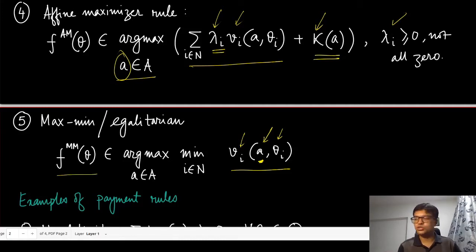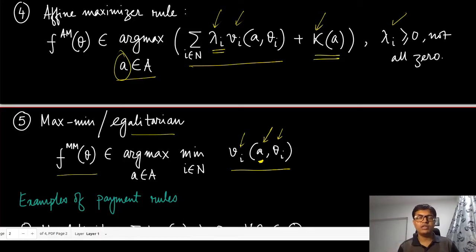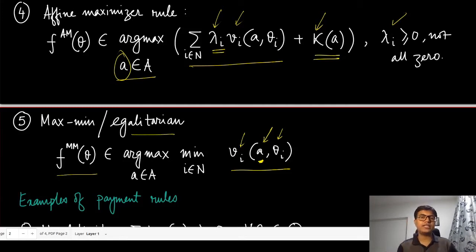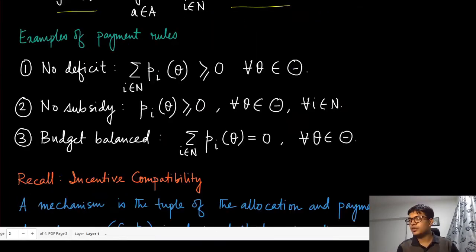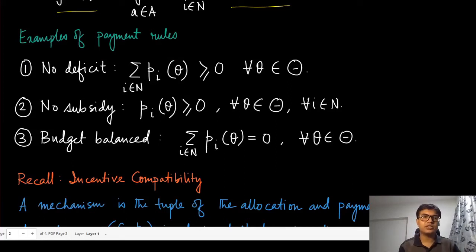This max-min rule is also called the egalitarian rule. In some literature you will see the term egalitarian used — meaning max-min — while utilitarian refers to the sum of valuations. That covers the examples of allocation rules; now let us look at payment rules.